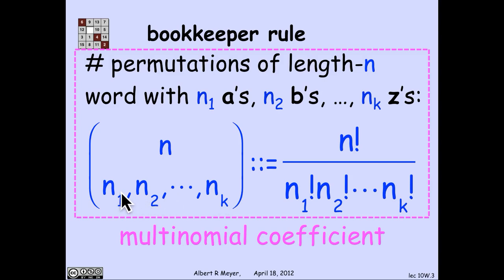This formula occurs so often that it has a name. It's called a multinomial coefficient written in this format: n over n1, n2 through nk. The convention is that the sum of the n_i's is supposed to equal the numerator n. This is called a multinomial coefficient.